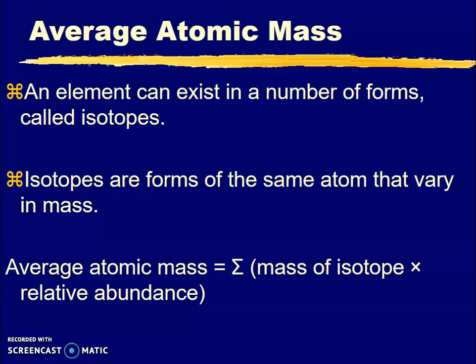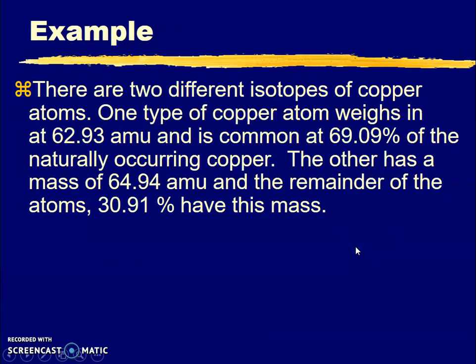Let's look at an example problem. These would be word problems where you have to find the information you need. There are two different isotopes of copper atoms. One type of copper atom weighs 62.93 amu and is common at 69.09% of naturally occurring copper.